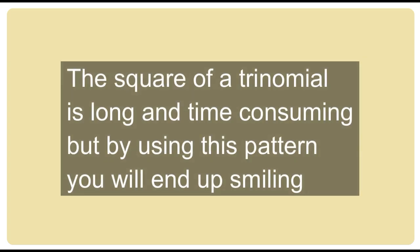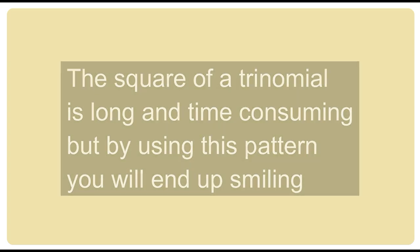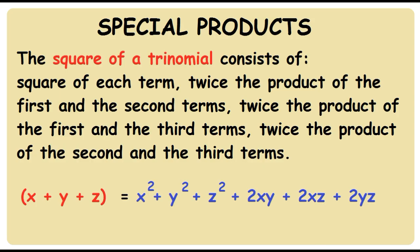The square of a trinomial is long and time consuming, but by using this pattern you will end up smiling. The square of a trinomial consists of: square of each term, twice the product of the first and the second terms, twice the product of the first and the third terms, twice the product of the second and the third terms.